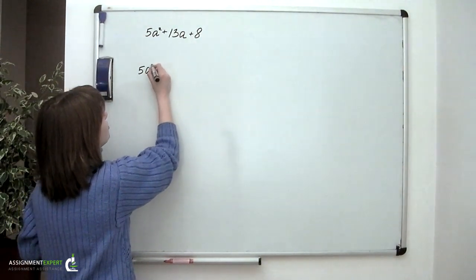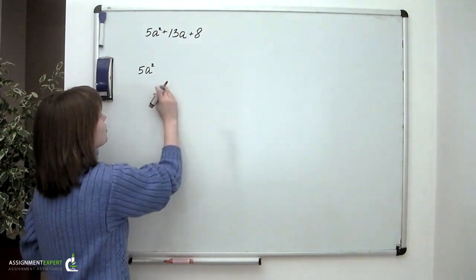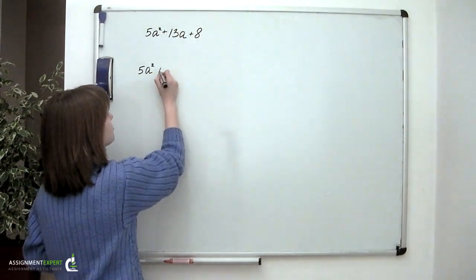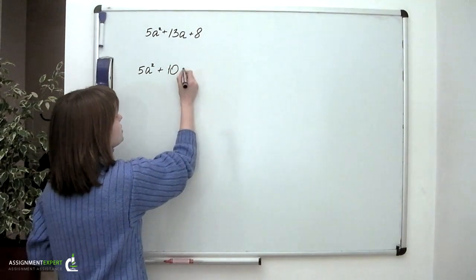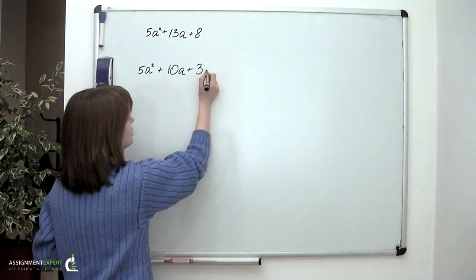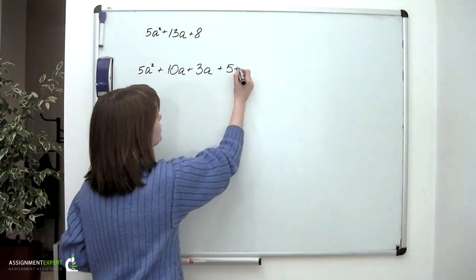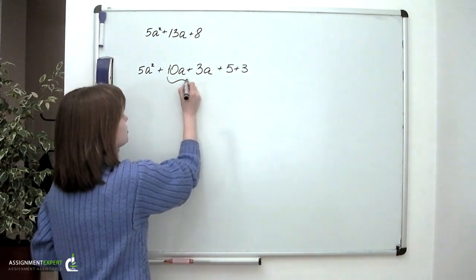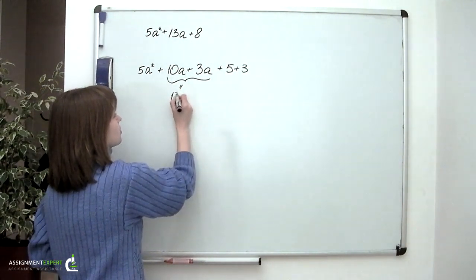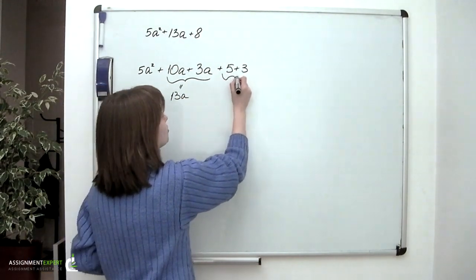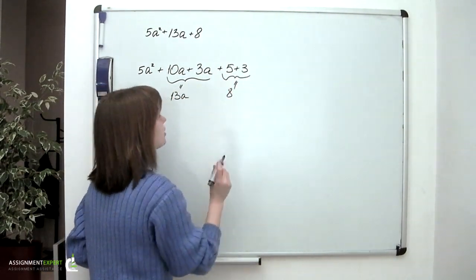Let's rewrite the expression in the following way. 5 times squared a plus 10a plus 3a and then plus 5 and plus 3. So these two summands will give us 13a and these two will give us 8. So basically nothing has changed.